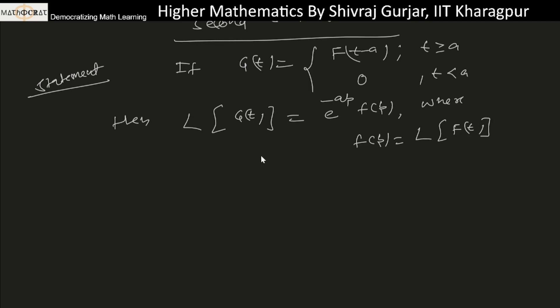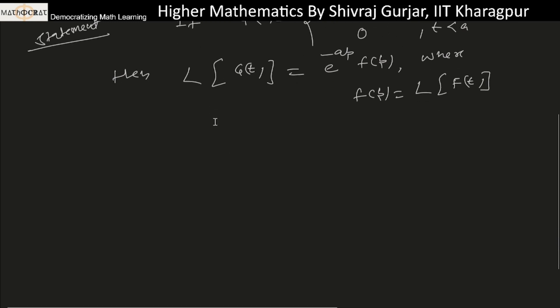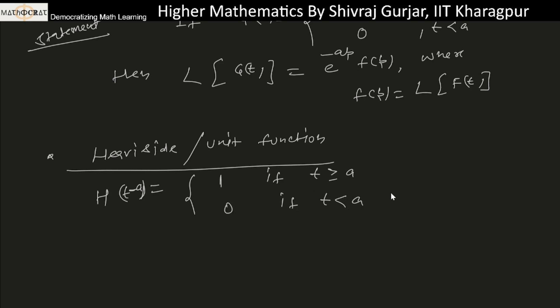This is the second shifting theorem. Here we should know this is known as the Heaviside function, or unit function. The Heaviside function H(t-a) is defined as 1 if t is greater than or equal to a, and 0 if t is less than a.